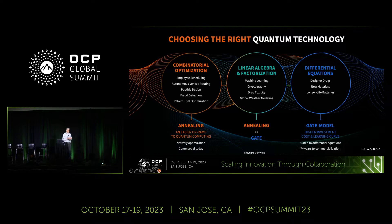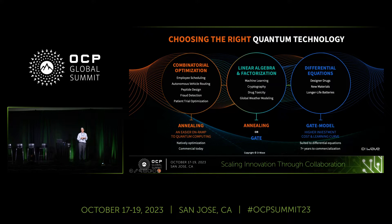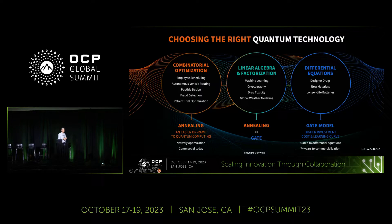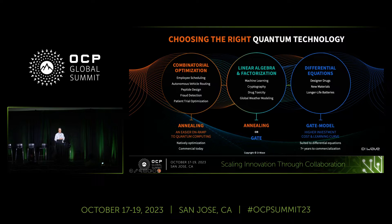Annealing quantum computing is really designed around solving combinatorial optimization problems. It excels at that and is currently better than gate model quantum computing for those problems, and it looks like it always will be. However, there are a number of problems where you'll really need error-corrected, high-quality qubits — gate model quantum computing — particularly for quantum chemistry modeling and drug discovery. D-Wave is actually seriously pursuing both modalities.